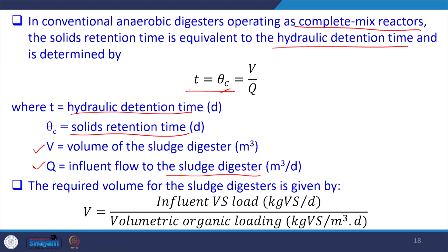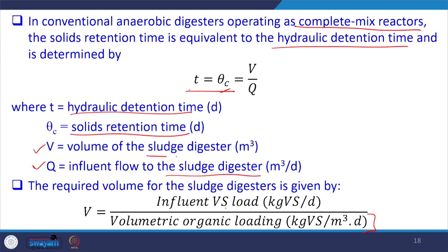In conventional anaerobic digesters operating as a complete mix reactor (CSTR), the solid retention time is equivalent to the hydraulic retention time. This is calculated as T equals theta_C (solid retention time) equals V divided by Q, where V is the volume of sludge in the digester and Q is the influent flow to the sludge digester. The required volume of the sludge digester is calculated by: V equals influent VS load (kg volatile solids per day) divided by volumetric organic loading (kg volatile solids per m³ per day). Through this, the volume required for the sludge digester can be determined.